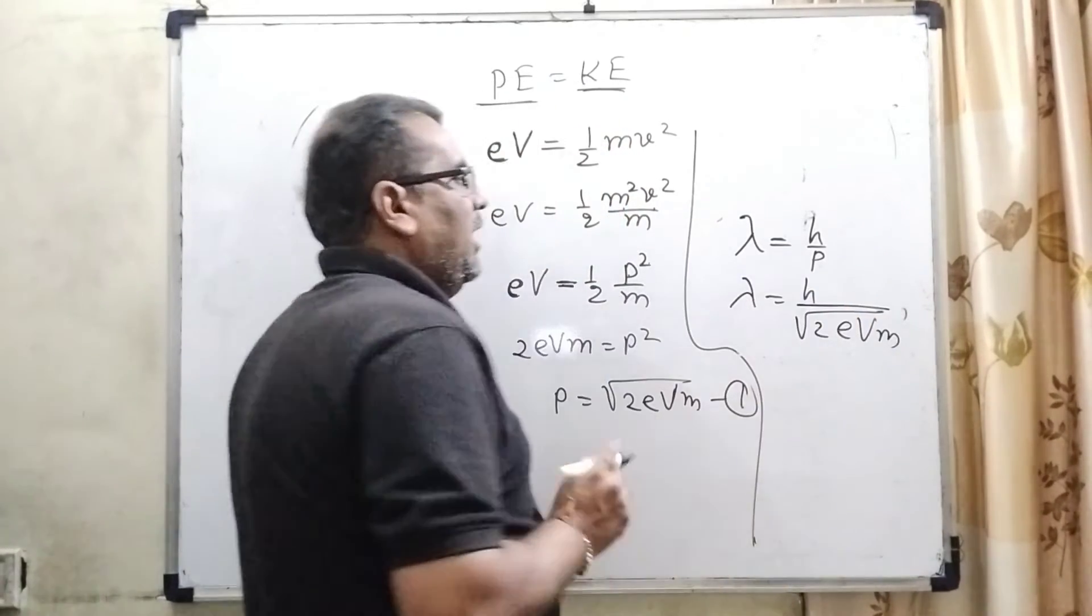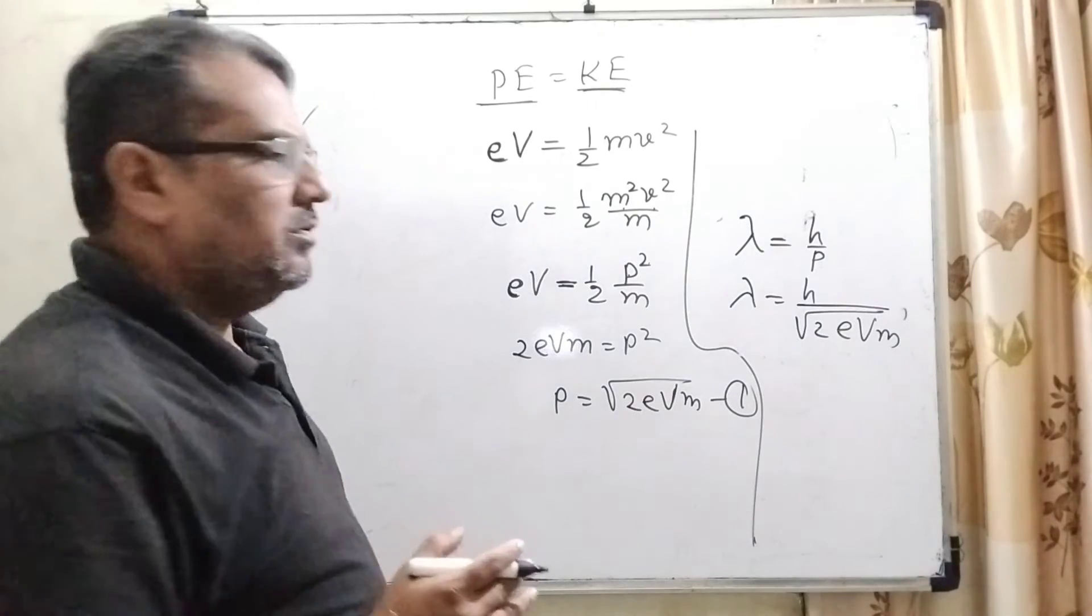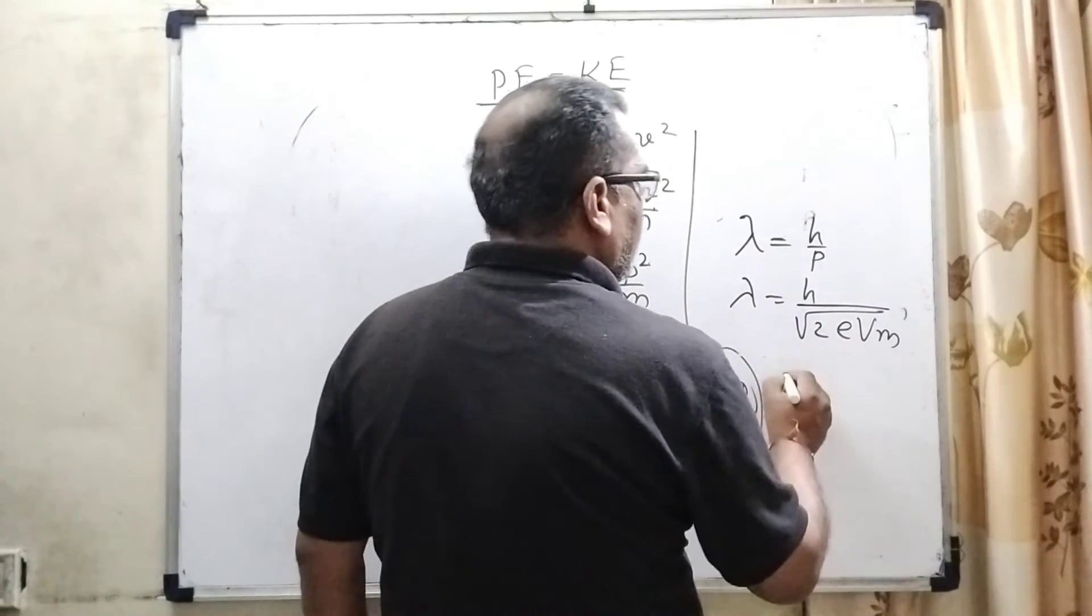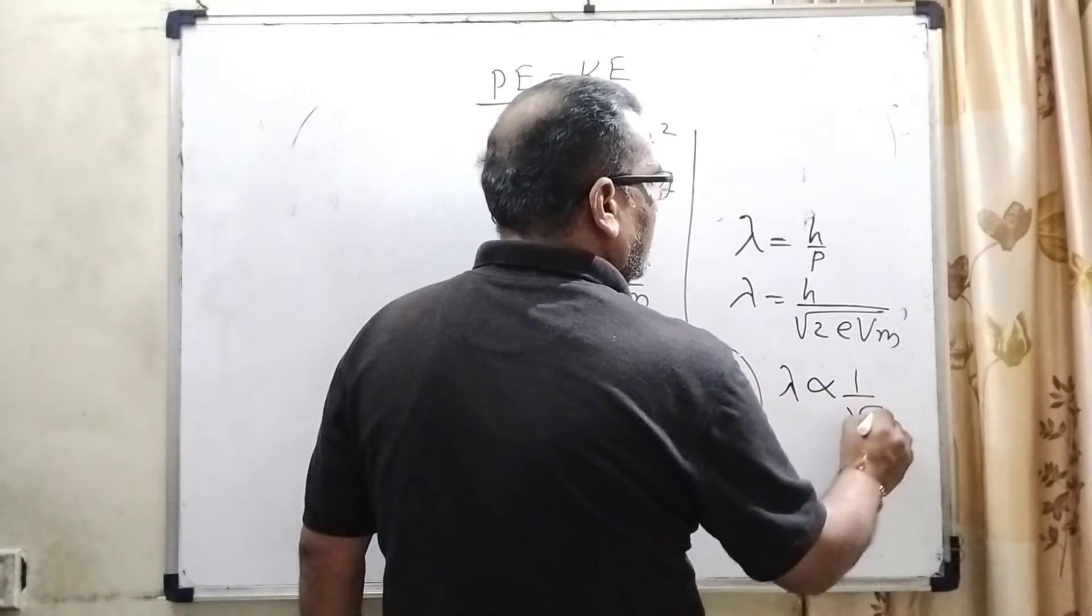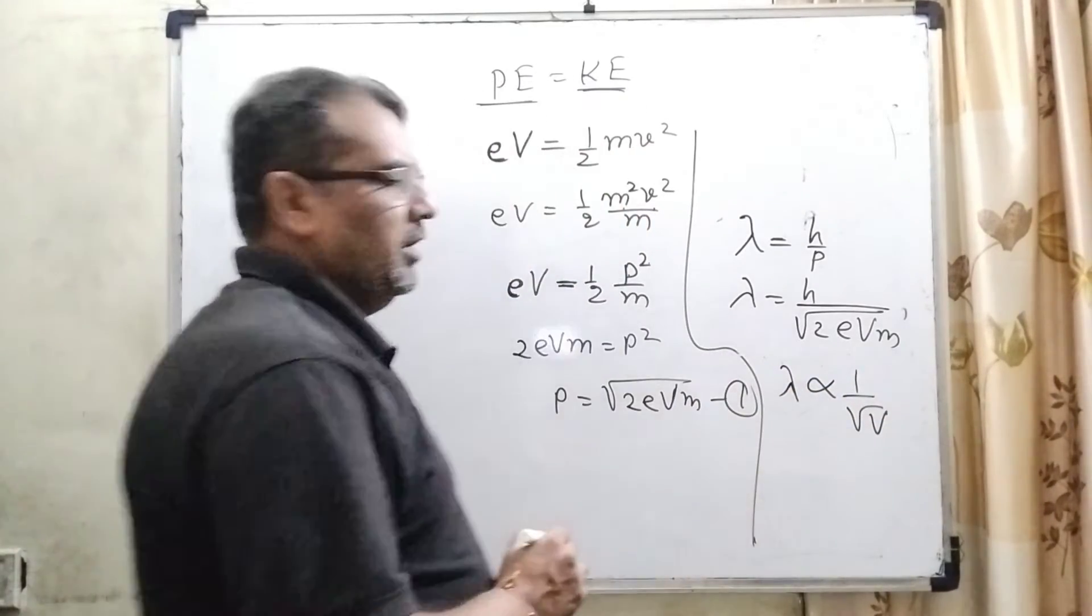Now you can see that h, Planck's constant, 2e, and m—all these values are constant. So it can be written as λ ∝ 1/√V.